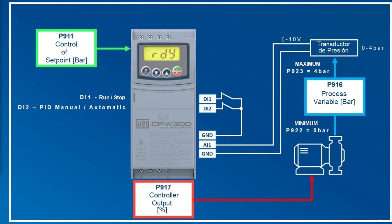In our demonstration, we kept the drive default adjusted gains, but it is important to highlight that adjusting the PID gains is a process that requires some attempts to achieve the desired response time. In the drive programming manual, there is a chapter related to the PID, where values of gains for more types of variables are suggested.